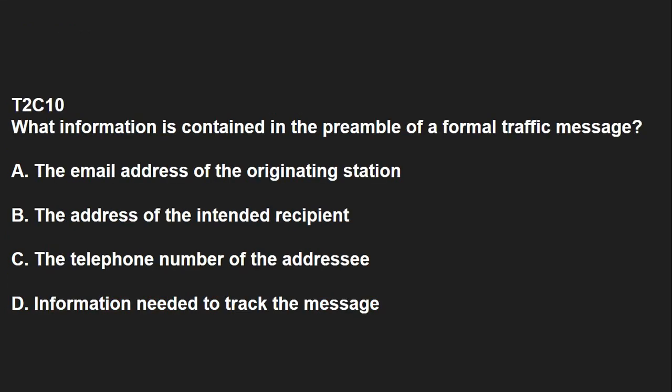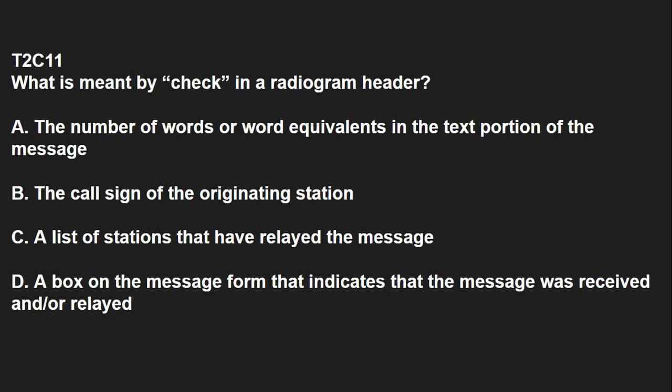T2C10: What information is contained in the preamble of a formal traffic message? Information needed to track the message. T2C11: What is meant by check in a radiogram header? That's the number of words or word equivalents in the text portion of the message.